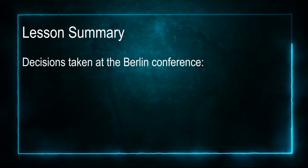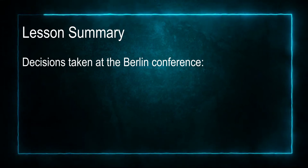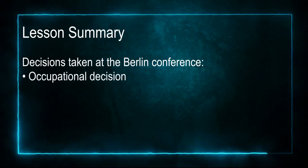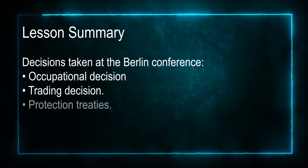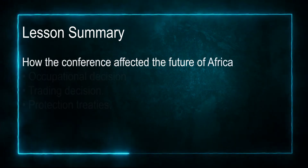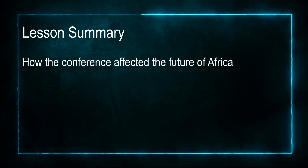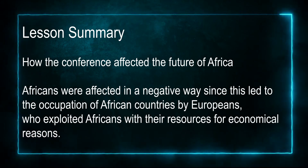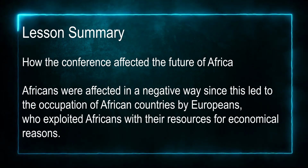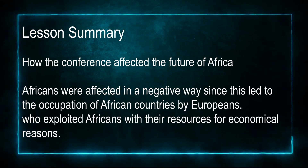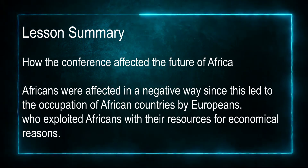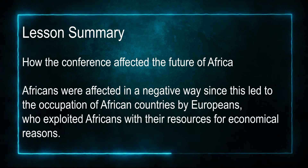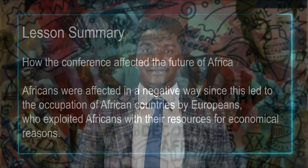The decisions taken at the Berlin Conference were: first, occupational decisions; second, trading decisions; and third, protection treaties. Africans were affected in a negative way, since this led to the occupation of many African countries by Europeans who exploited Africans and their resources for their own economic gains. Thank you very much for watching — I hope you enjoyed the lesson. Take care until we meet again.